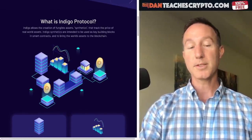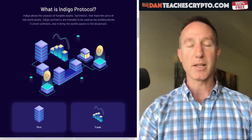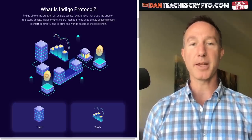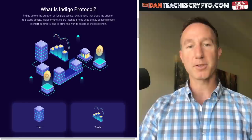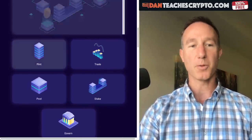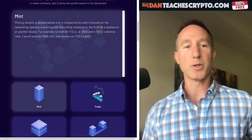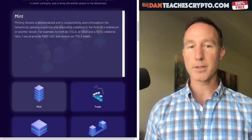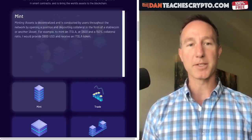So let's take a look at what the protocol essentially is. It allows the creation of fungible assets — synthetics — that track the price of real-world assets. Synthetics are intended to be used in blockchains. The minting of iAssets is decentralized and conducted by users throughout the network by opening a position and depositing collateral.